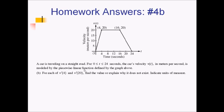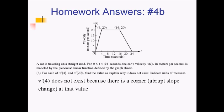For number four, a car travels on a straight road with velocity in meters per second modeled by a piecewise linear function from zero to twenty-four seconds. We want v prime of 4 and v prime of 20. At t equals four there is a corner, which is a non-differentiable point, so v prime of 4 does not exist.